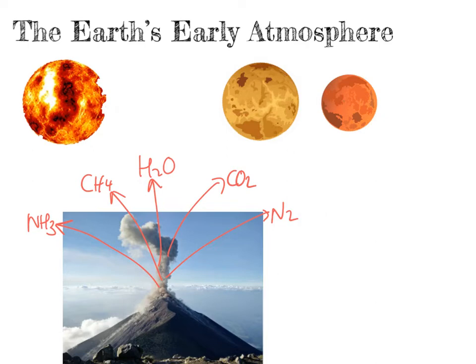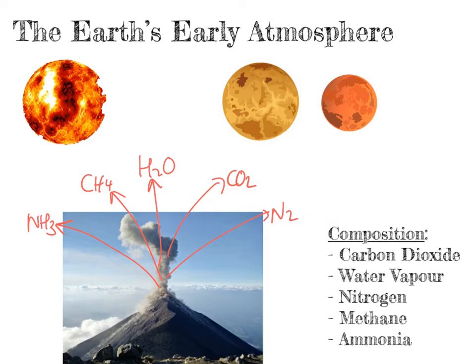The composition of the Earth's early atmosphere was primarily carbon dioxide, water vapour, nitrogen, methane, and ammonia. Over the past 4 billion years, this has changed considerably, and now the composition of our atmosphere looks very different. We're going to look at some of the changes that happened on Earth that affected the composition of the atmosphere, in chronological order, and then break it down and look at each gas individually.